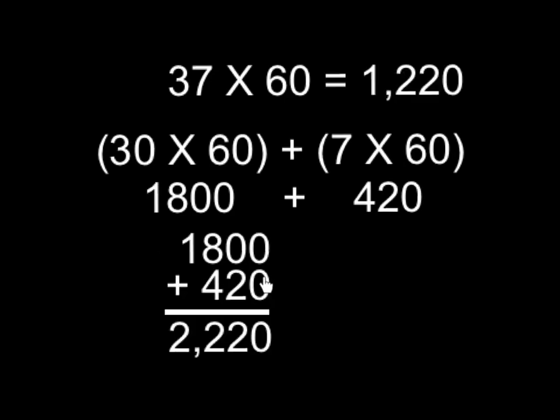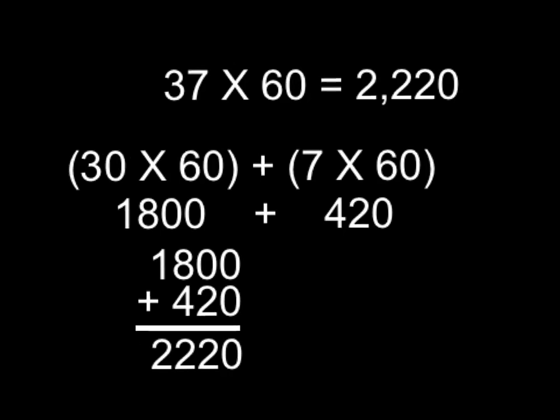When I add my zeros in the ones column, I get zero ones. Zero tens and two tens give me two tens. Eight hundreds and four hundreds give me twelve hundreds, so I'm going to carry that one. And that will give me 1000 plus another 1000, which gives me 2220. So the answer to our problem, 37 times 60, is 2220.